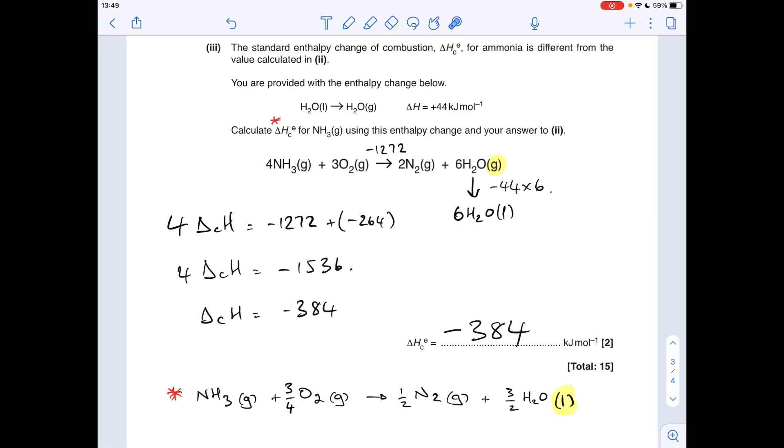Okay, so the final part of the question. I think it's quite tricky this one, so I'll take my time explaining and hopefully it'll make sense. The standard enthalpy change of combustion for ammonia is different to that calculated above, the one that we got minus 1272 for.